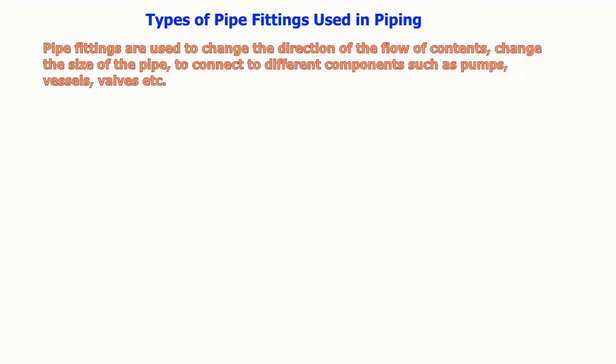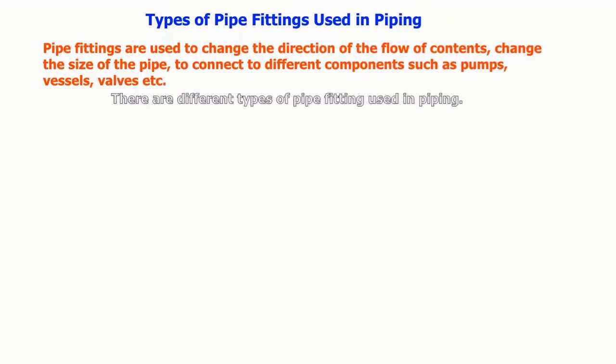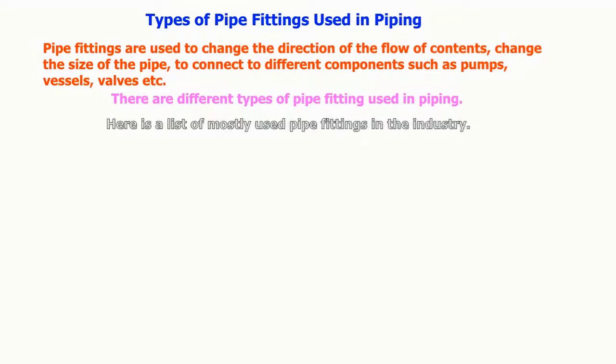Types of pipe fittings used in piping. Pipe fittings are used to change the direction of the flow of contents, change the size of the pipe, to connect to different components such as pumps, vessels, valves, etc. There are different types of fittings used in piping.